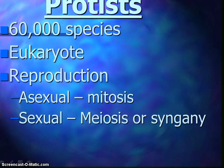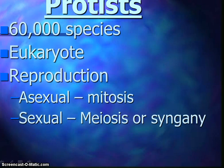For reproduction, they can reproduce asexually by mitosis — they do have a nucleus. And sexual reproduction occurs through meiosis, conjugation, or syngamy, which is pretty much the union of two gametes.